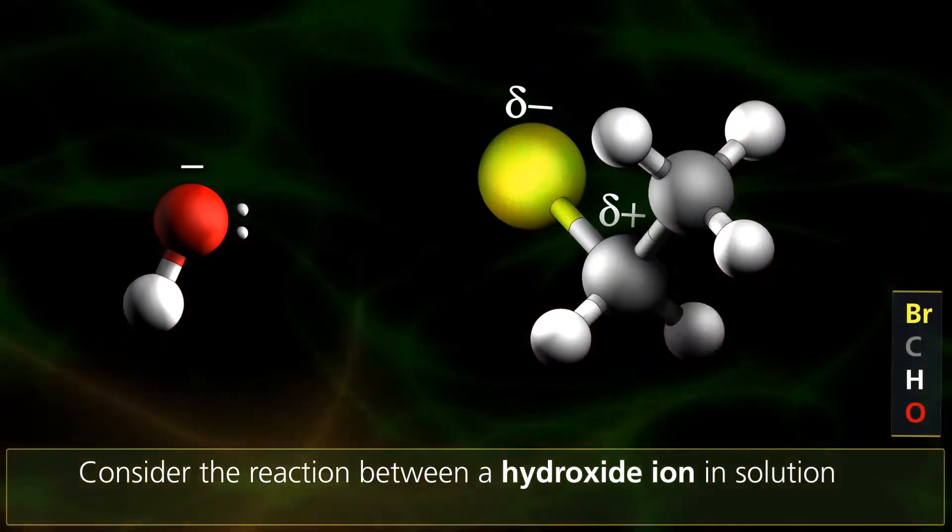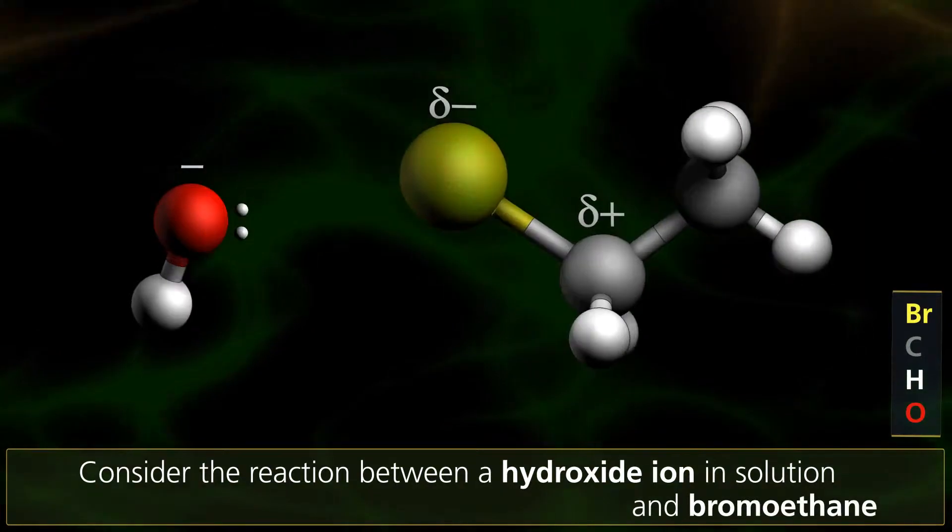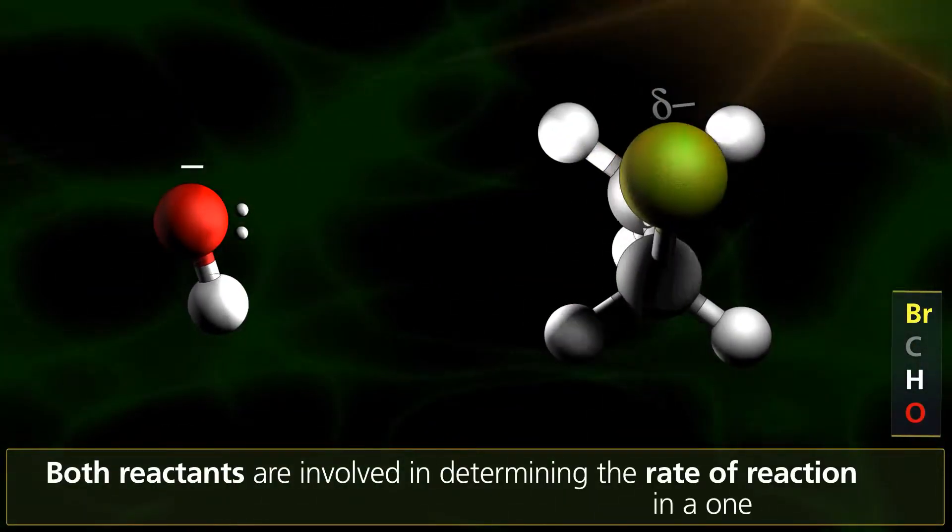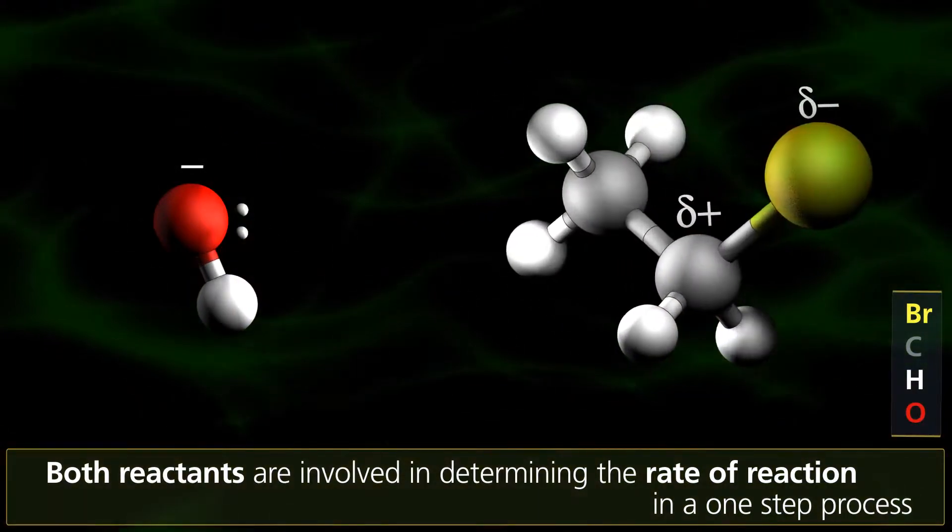Consider the reaction between a hydroxide ion in solution and bromoethane. Both reactants are involved in determining the rate of the reaction in a one-step process.